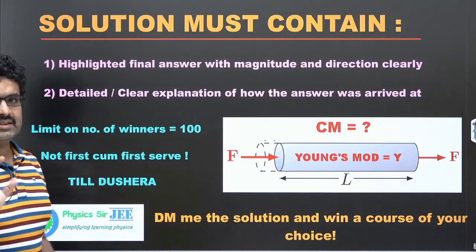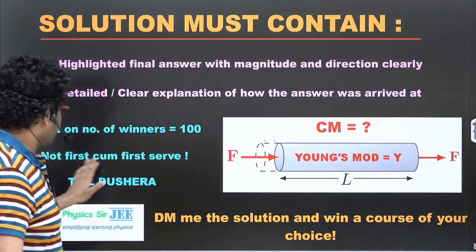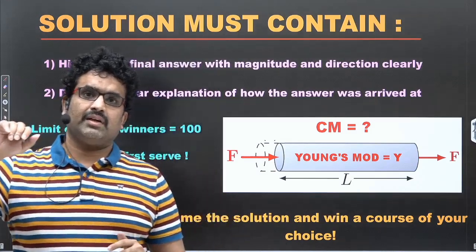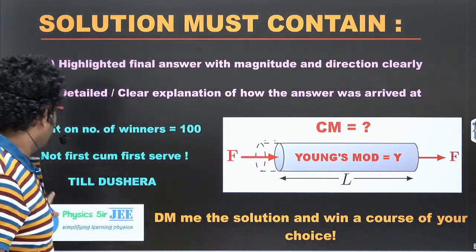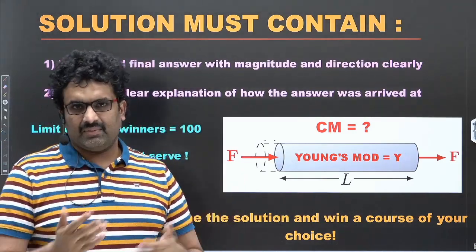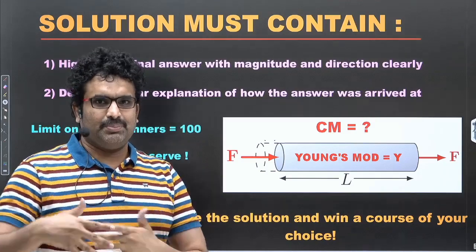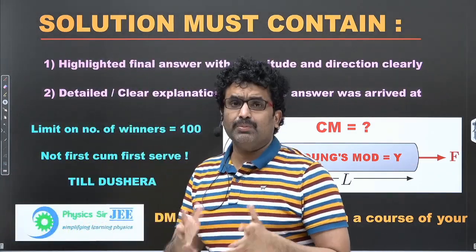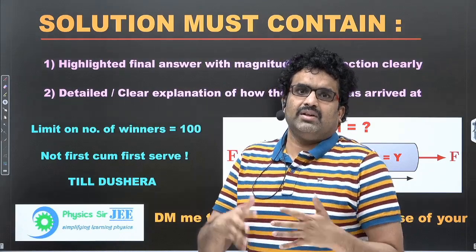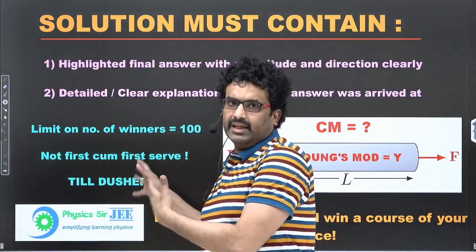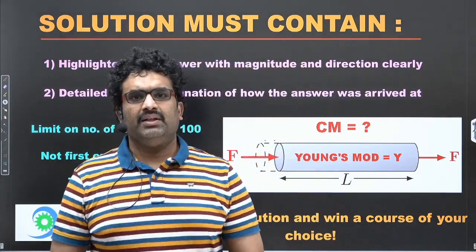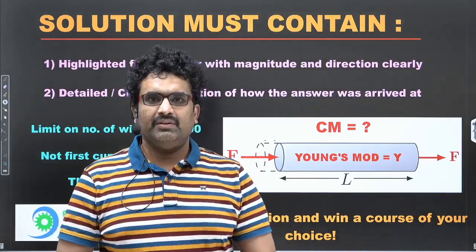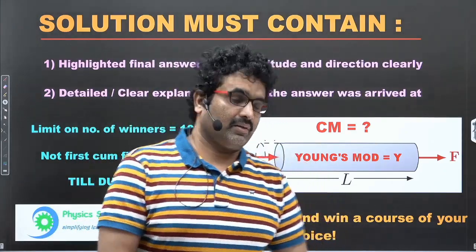The limit on the number of winners is 100. But that doesn't mean you have to send it first — there is no first-come, first-served basis. You can send it after 10 days, but if 100 correct solutions have come by then, the contest is null and void. The contest is also valid till Deshara. If I don't receive that many entries, I will close the contest by Deshara, and at that time I will reveal the solution. I may not reveal the list of winners for anonymity, but I will tell you how many people won.